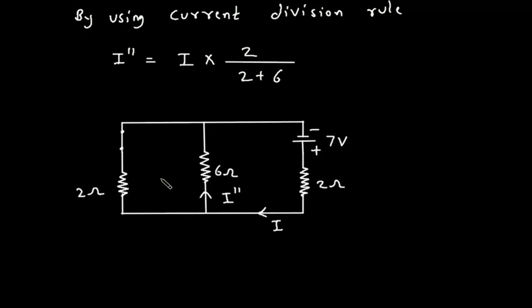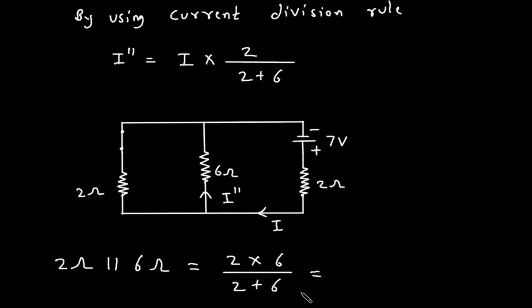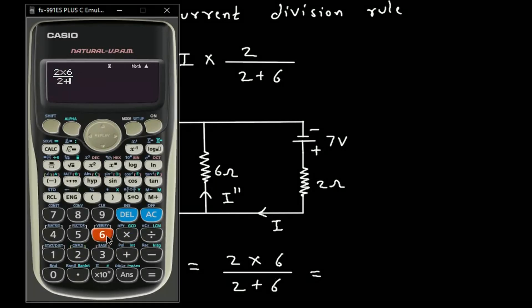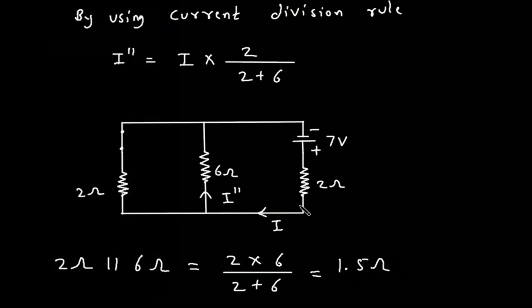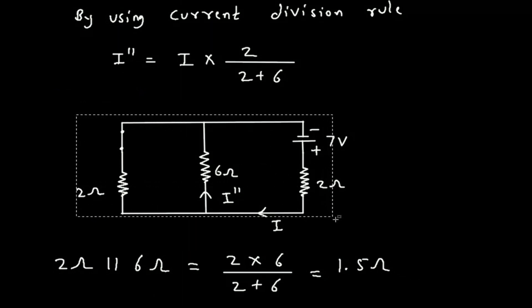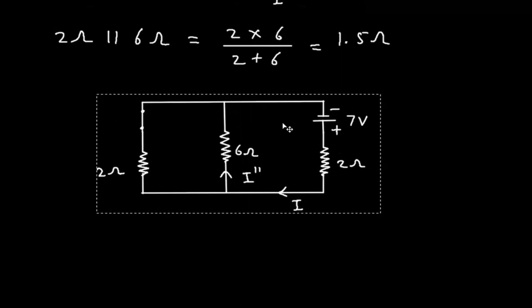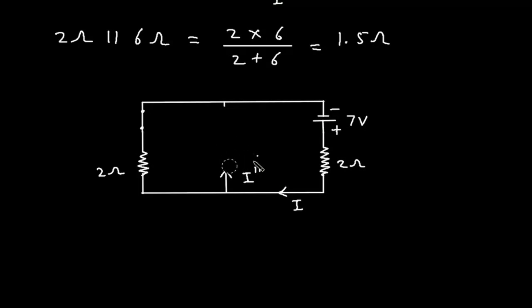Here the 2 ohm is in parallel with the 6 ohm. This gives 2 into 6 divided by 2 plus 6, which is again 1.5 ohm. We will replace these two resistors with a 1.5 ohm resistor.